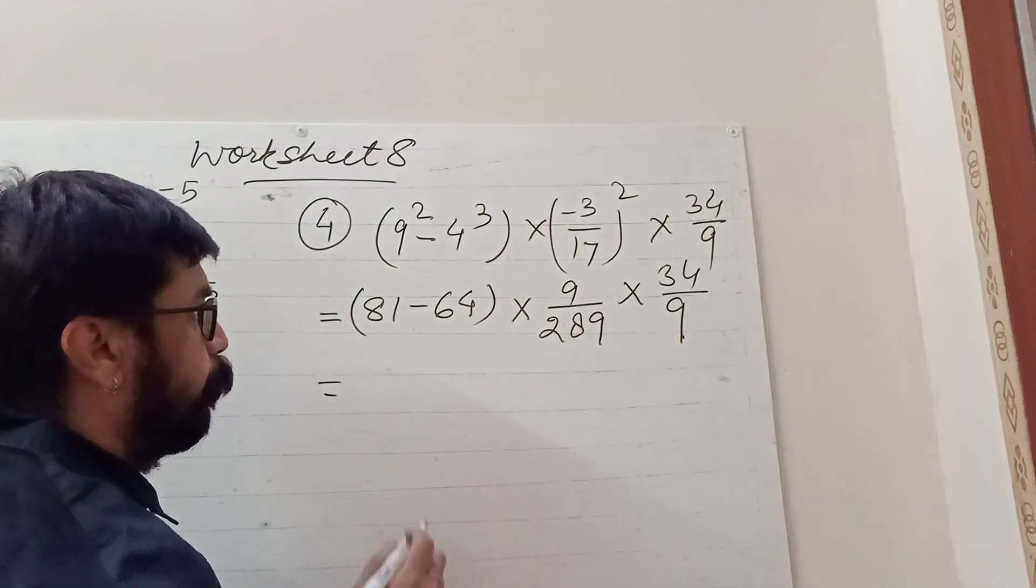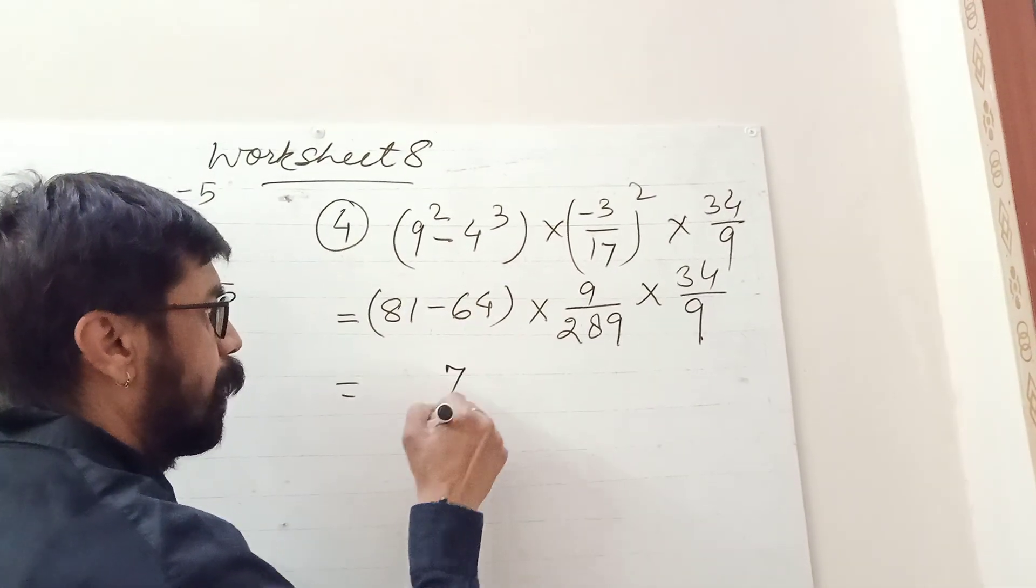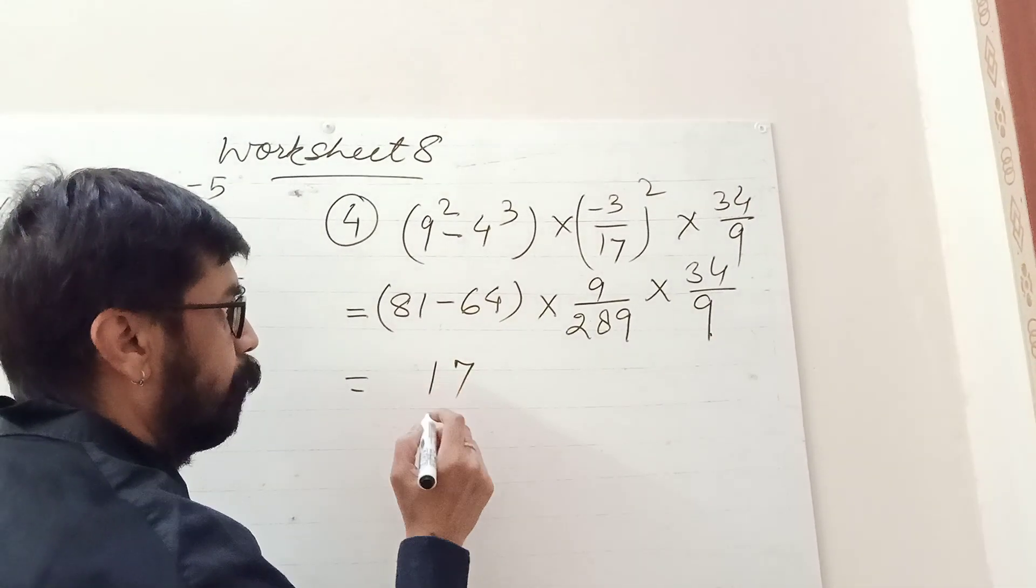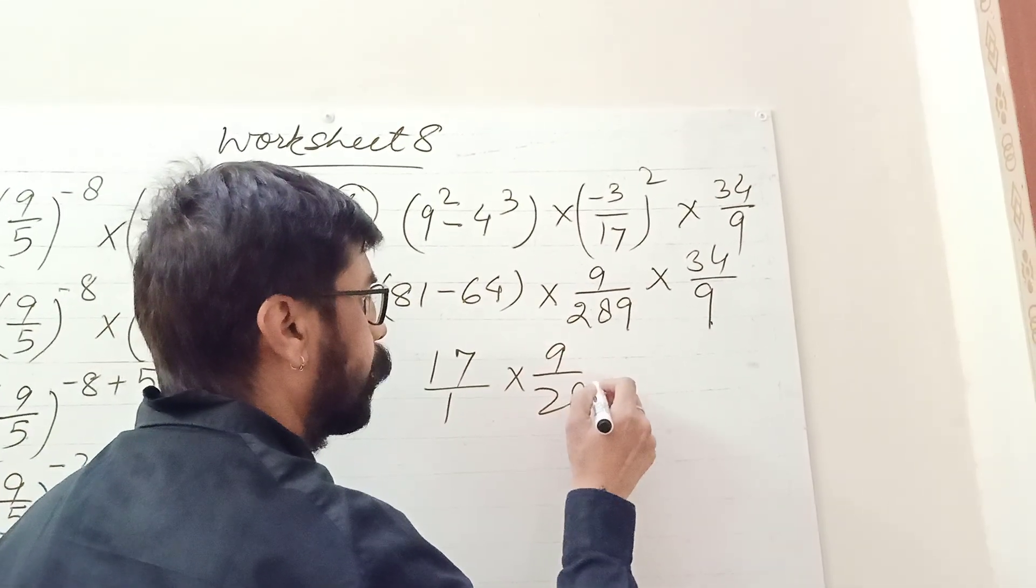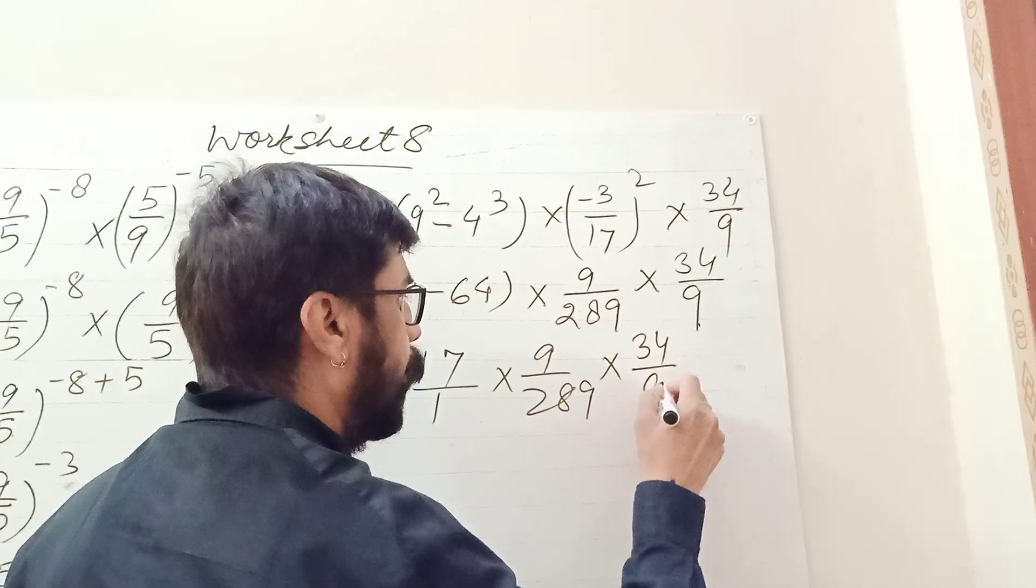81 minus 64 is 17, upon 1 into 9 upon 289 into 34 upon 9.